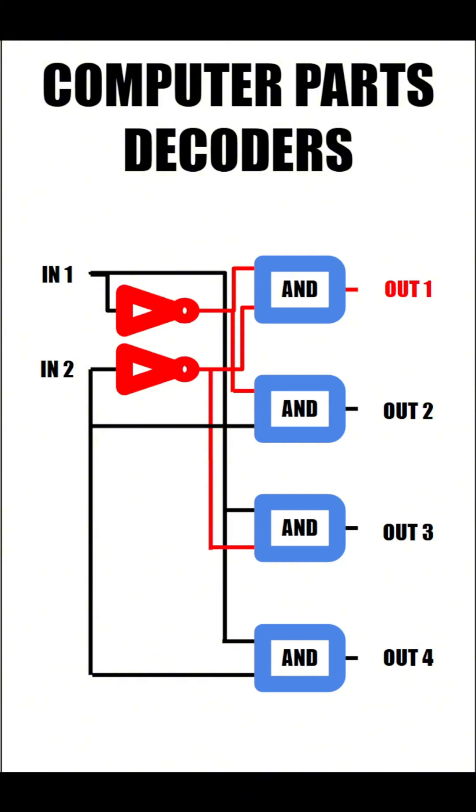But what's really going on here? We can think of decoders as an address system, where each of these outputs have a unique address. The reason that output 1 is on right now is because its address is 0,0, meaning that it will turn on when both inputs are off.